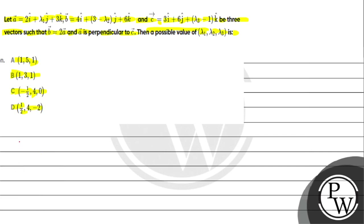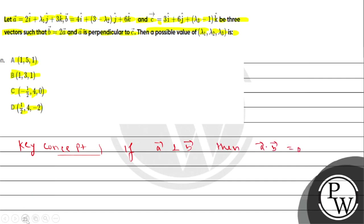To solve this question, we need to think about the concept: if vector c is perpendicular to vector a, we need the dot product of vector a and vector c to be equal to zero.